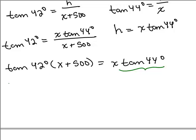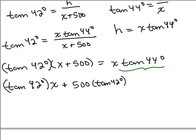Now be careful here. The tangent 44 degrees on the right is really just the coefficient of X. We are not going to use a calculator and approximate it. We're going to leave everything just the way it is. I'm going to distribute here, so I've got tangent of 42 degrees times X plus 500 times the tangent of 42 degrees equals the tangent of 44 degrees times X. So I'm going to subtract this tangent 42 degrees X on both sides.